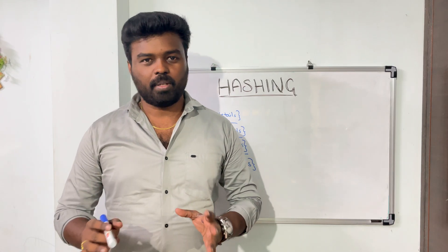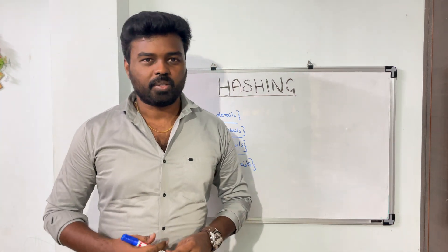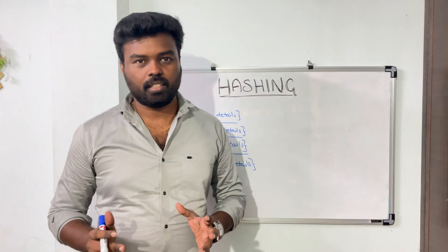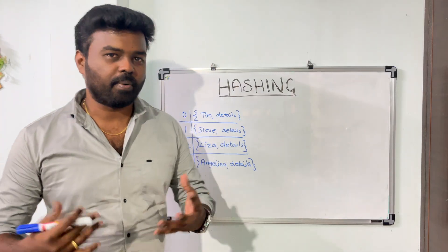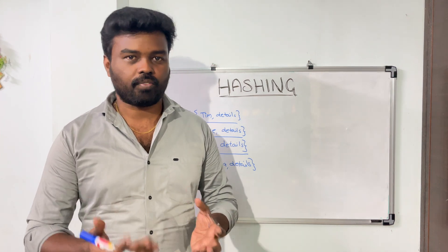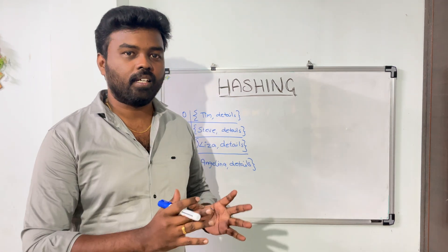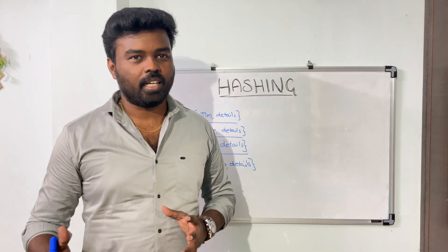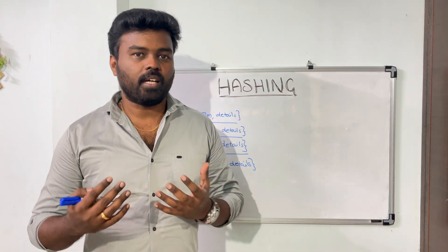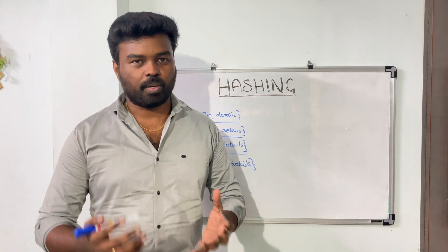Consider this simple example where we have an array which contains a list of employee names. It basically contains the employee name and the corresponding employee details associated with that. The employee details could be anything — it could be performance-related details, contact details of the employee, or any other details. So we have an array which contains the list of employee names and the associated employee details. The requirement is: you will be given the employee name and you need to find the corresponding employee details from the array.